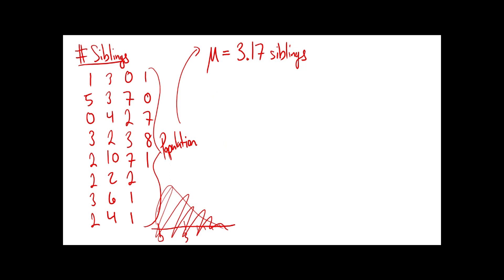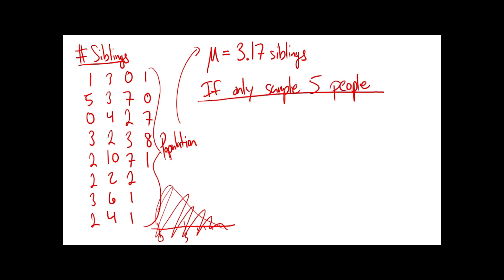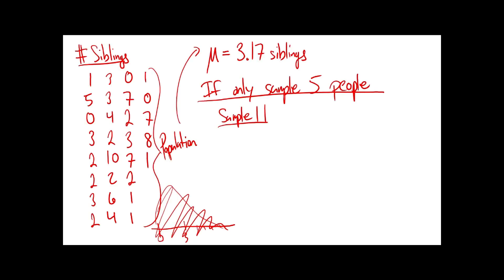Now what I want to think about is: let's say I didn't allow you to sample everybody in this room. I said I want you to guess the average number of siblings of people in this room, but you can only sample five people. What's going to happen every time I take a sample? What's going to happen to my sample mean? I can only talk to five people, and I'm going to maybe average their number of siblings - but what's going to happen each time? Probably the average is going to be different.